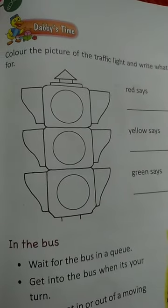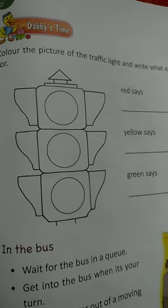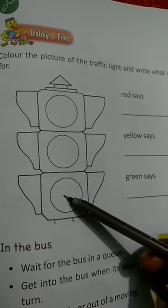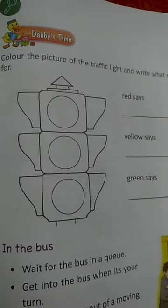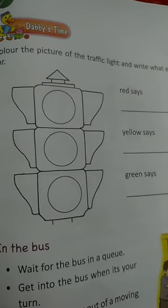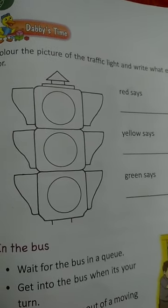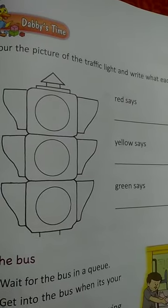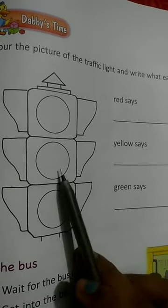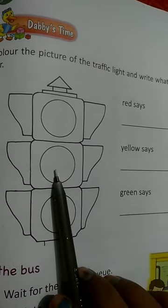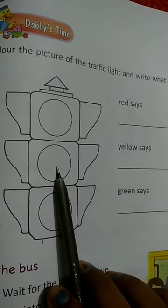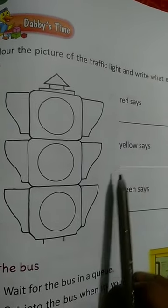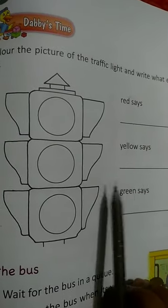There are three colors in a traffic signal. First one is red, second one is yellow, and third one is green. Red light says stop — whenever the red light turns on, all vehicles on the road will stop. Yellow says wait — whenever the yellow light turns on, all people wait until the light turns green.